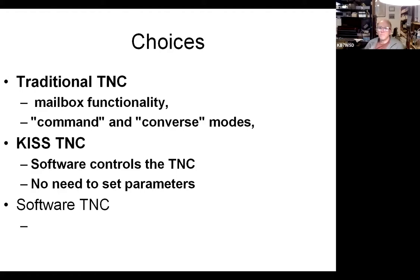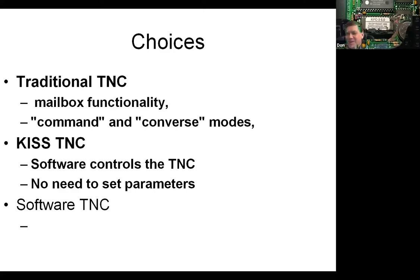Don's question: he keeps hearing more about VARA and how it's awfully fast, which makes him wonder about buying a PACTOR 4 modem and spending all that money on hardware. Is there a point where things like VARA, using a sound card, cross over and exceed what PACTOR 4 can do? Or are there limitations in that you actually need hardware for the fastest throughput? At what point can you effectively offload things to any computer versus using specialized hardware like on a PACTOR modem?